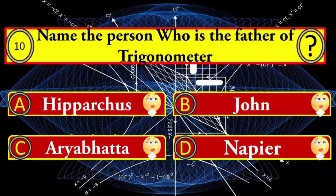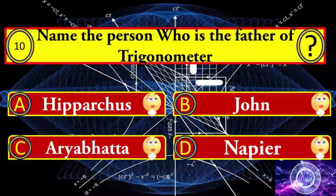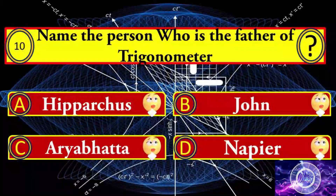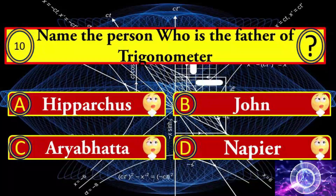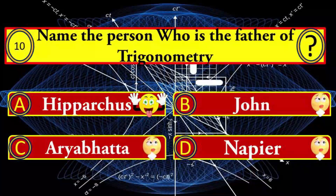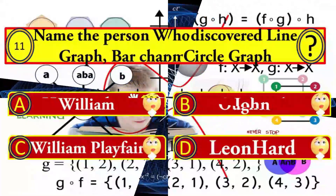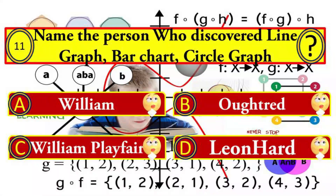Question number ten: name the person who is the father of trigonometry. Your options: A) Hipparchus, B) John, C) Aryabhatta, and D) Napier. Hipparchus is the right answer.